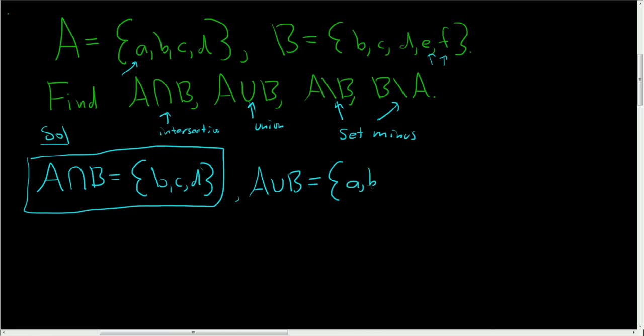So we just write everything down, A, B, C, D, E, F. So that's how you find the union, A union B.